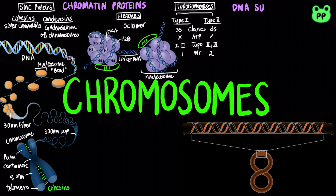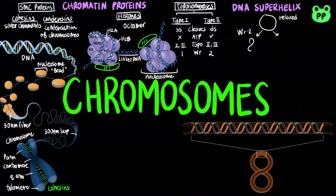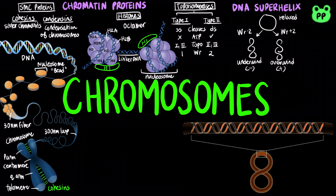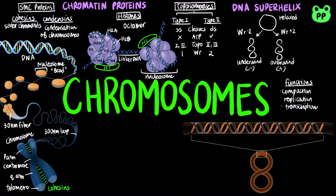DNA supercoiling refers to overwinding or underwinding of a DNA strand. The relaxed DNA is a closed circular molecule. Left-handed underwinding of DNA creates negative supercoils, while right-handed overwinding creates positive supercoils. Most cellular DNA is underwound, and the regulation of negative supercoiling by topoisomerases plays a huge role in DNA compaction, replication, and transcription.